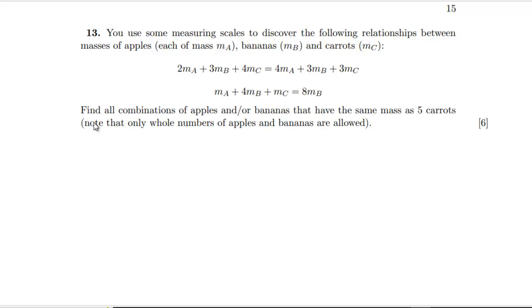Right, so we're going to need to get apple in terms of carrot and banana in terms of carrot. That seems to be the way to go. So let's write this out in a slightly clearer way. I don't like all these subscripts that we've got going on here. So I'm going to have 2A plus 3B plus 4C equals 4A plus 3B plus 3C. So we've got that 2A is equal to C. So A is C over 2.